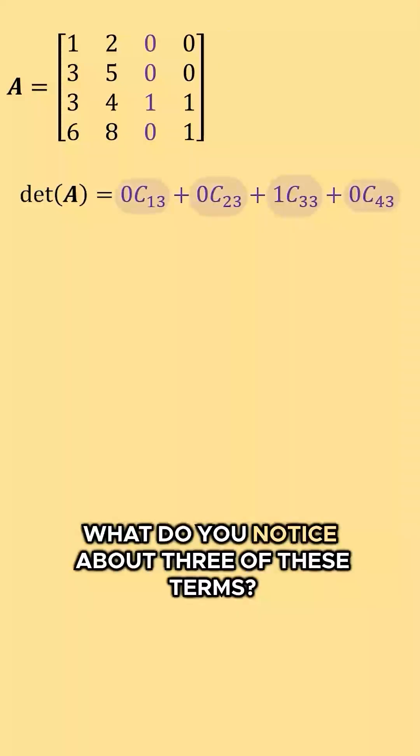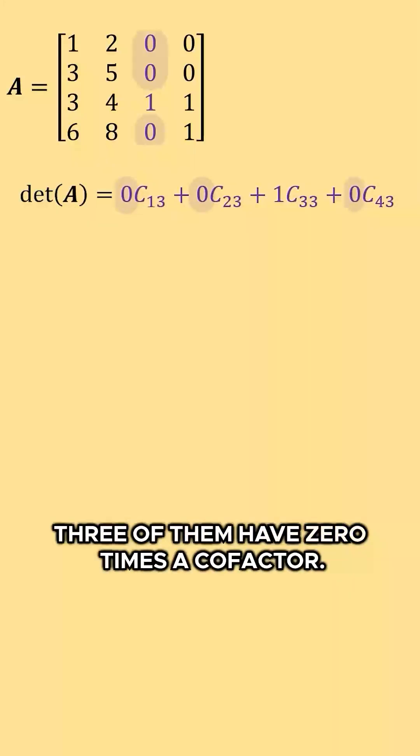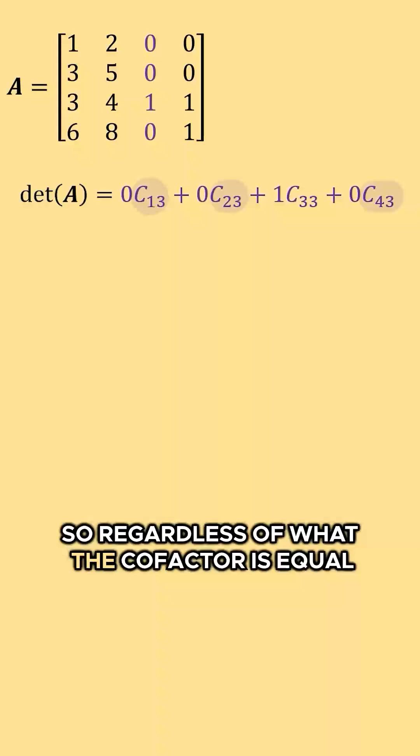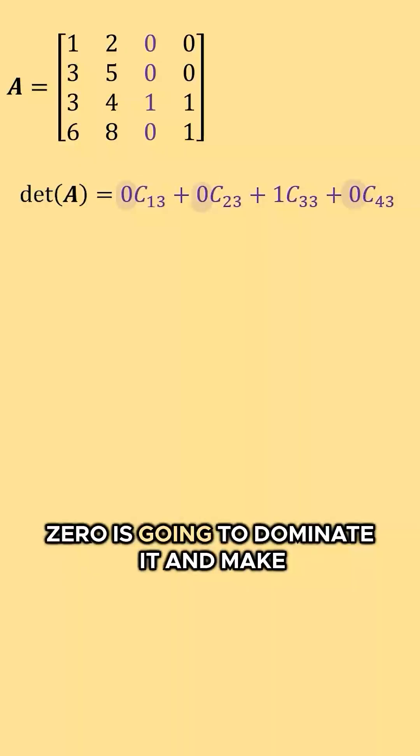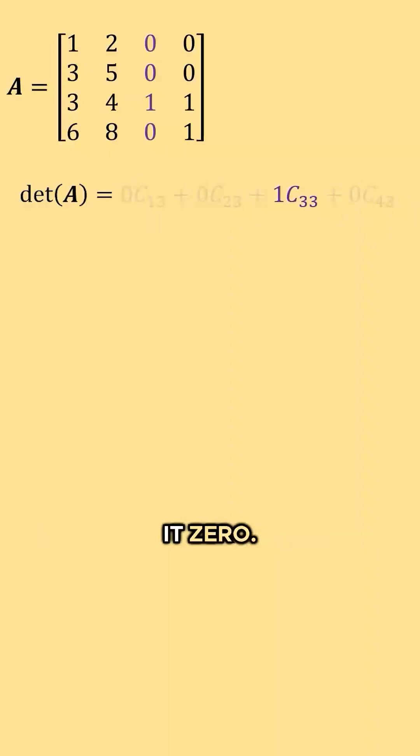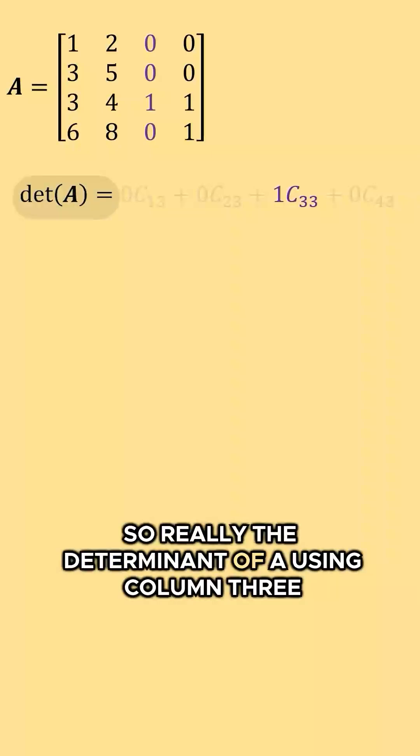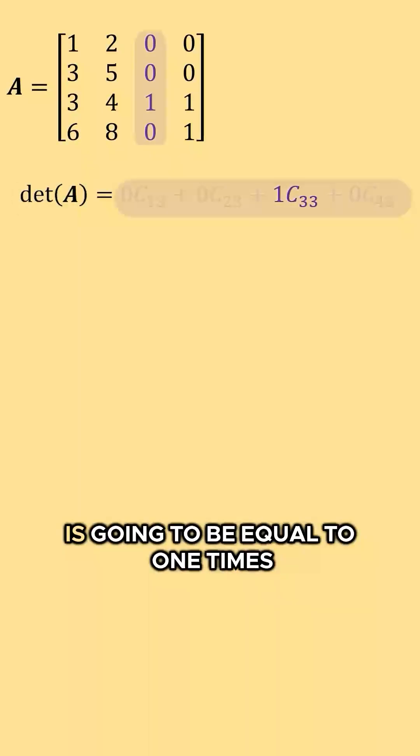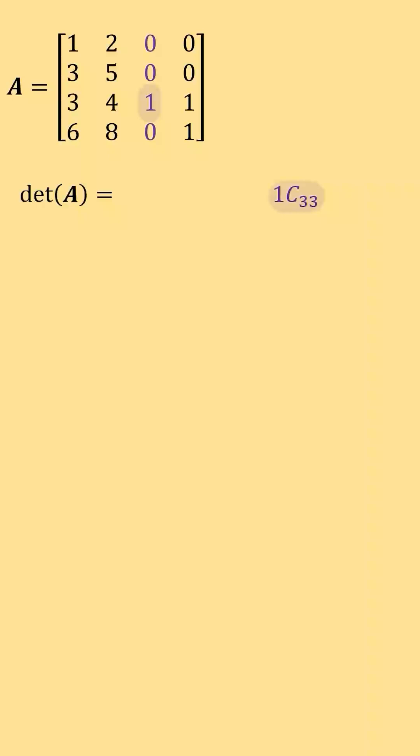What do you notice about 3 of these terms? 3 of them have 0 times a cofactor. So regardless of what the cofactor is equal to, the 0 is going to dominate it and make it 0. So really, the determinant of A using column 3 is going to be equal to 1 times C33.